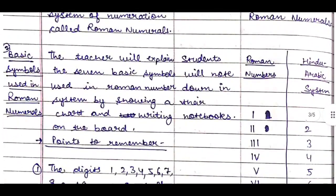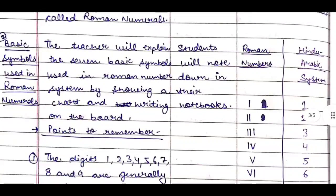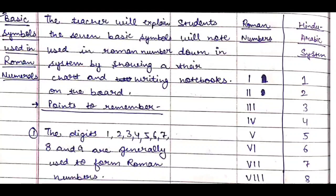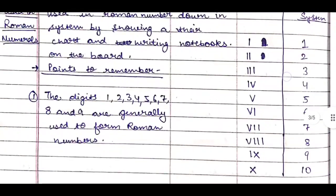After that, next teaching point is basic symbols used in Roman numerals. The teacher will explain the seven basic symbols used in Roman numerals system by showing a chart and writing on the board. You should prepare a chart for this. The students will note down in their notebook. We will do the blackboard work like I have done here. We will write the Roman numerals and then the Hindu Arabic system. Points to remember: We will tell them some points that they should know.